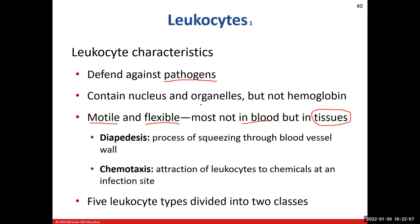With chemotaxis, you might wonder how white blood cells know where to go. They have this process of chemotaxis, which attracts white blood cells to the infection site using chemicals — hence the term 'chemo.' Cells in the area of infection release chemicals that attract the white blood cells, essentially signaling: hey, there's a problem here, there's an infection going on, we need you in this spot.